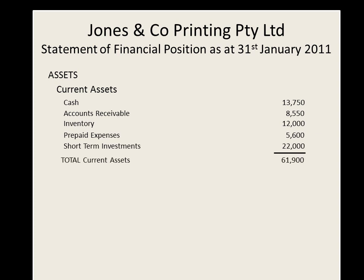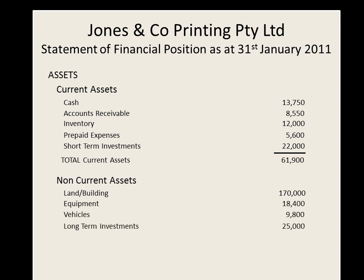Next are non-current assets, which are also called fixed assets. These include land and buildings, equipment such as machinery, vehicles and long term investments. Also note that if any of these assets, or a portion of them, are expected to be disposed of within the next 12 months, that portion can be transferred to current assets. Add these together and we have our total assets.